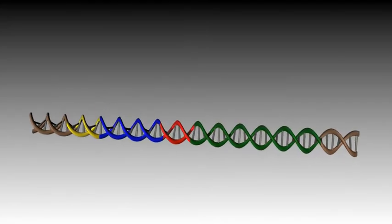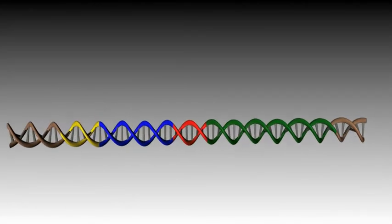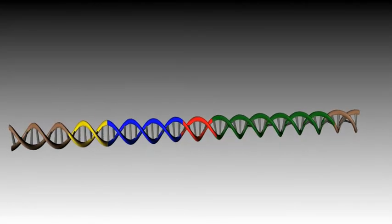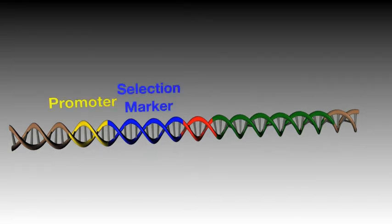The modular elements of the EXOIN system are the promoter in yellow, the selection marker in blue, the EXOIN tag as core of the technology in red, and the target sequence in green.